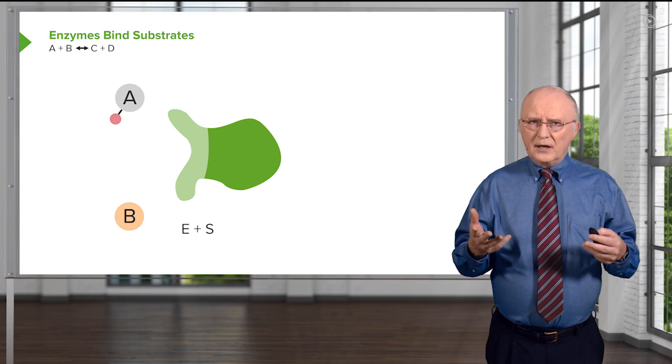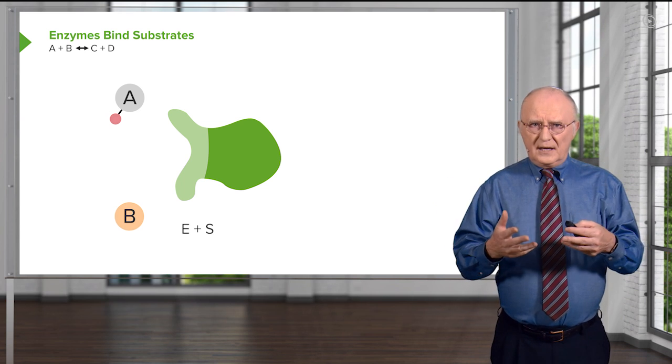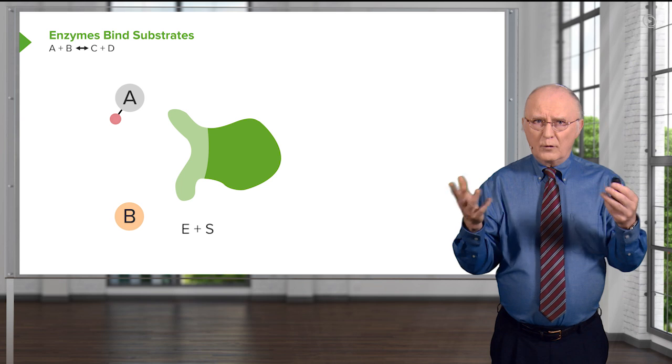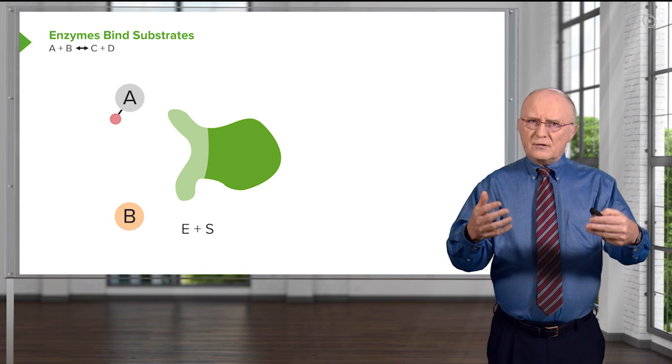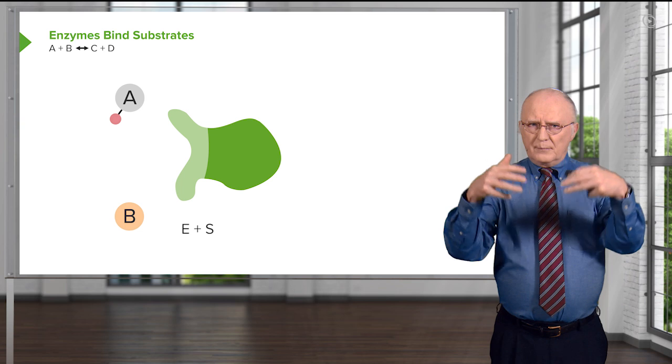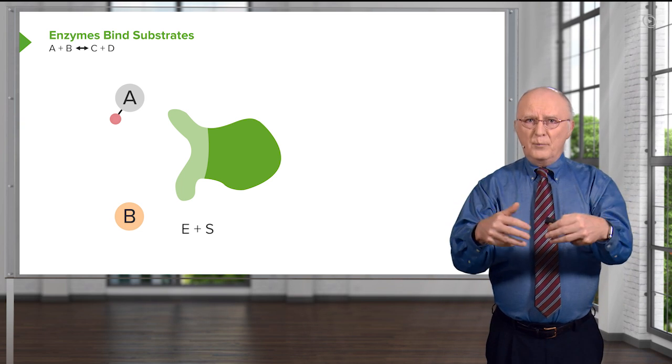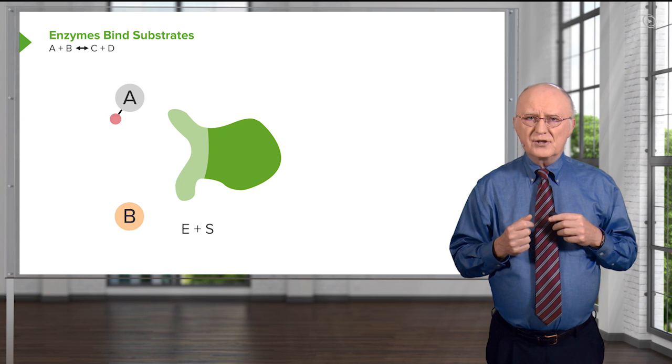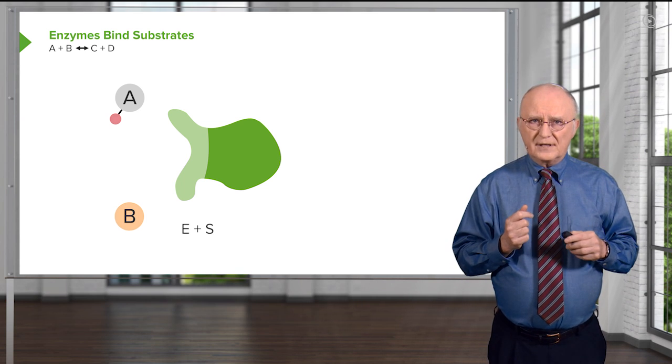We start with the enzyme unloaded. No products contained, no products on the enzyme and, of course, no substrates. The substrates are the molecules that bind to the enzyme and they will bind so as to be positioned at the place where the reaction occurs, the active site.